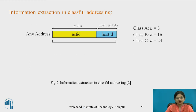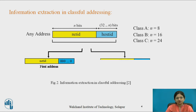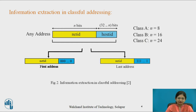Let me explain the same concept with the help of this diagram. To find the first address, we keep the net ID as-is and set the host ID bits to 0s. Similarly, to find the last address, we keep the net ID as-is and set the rightmost bits to 1s.